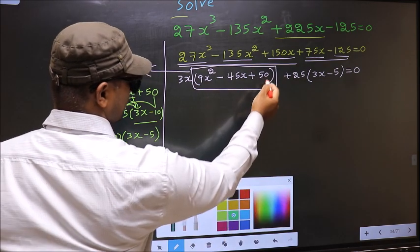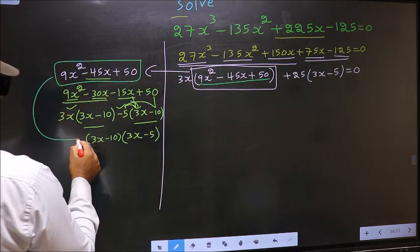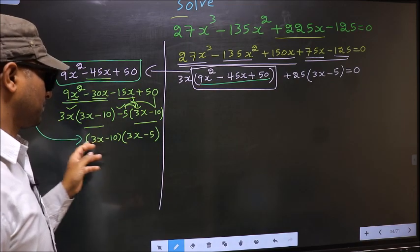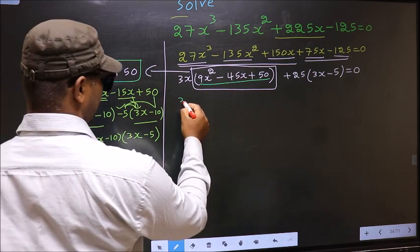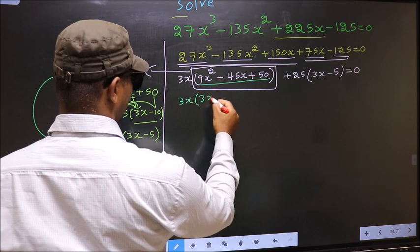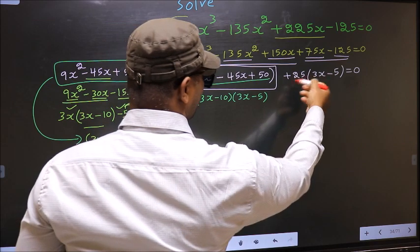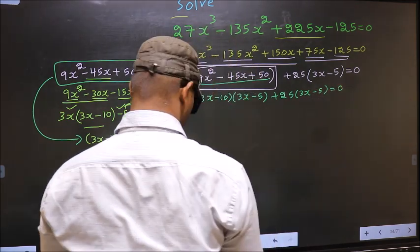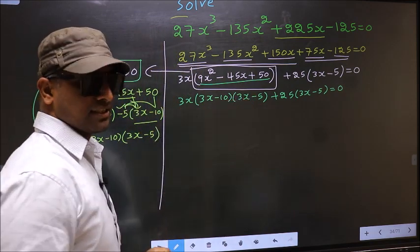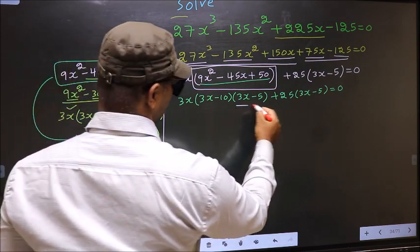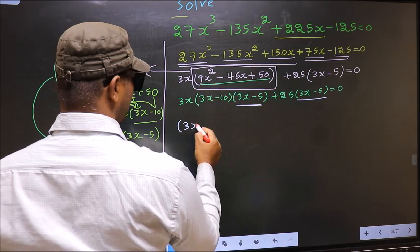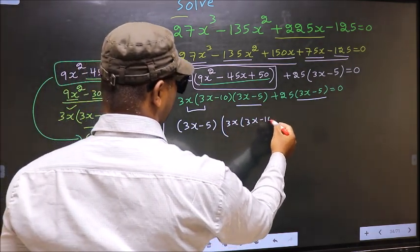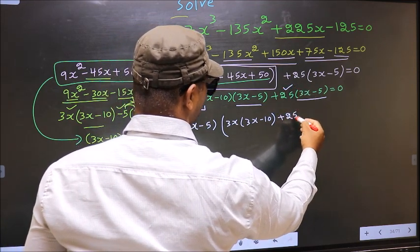Now in place of this quadratic, we should write this factored form. So this equation will change. From this complete equation, what can be taken out common is 3x minus 5. So 3x minus 5 outside — over here we are left with 3x times 3x minus 10, and over here we are left with plus 25, equal to 0.